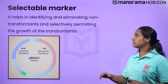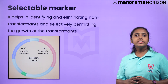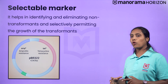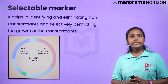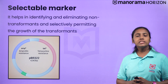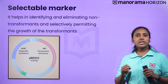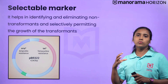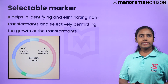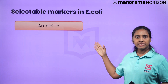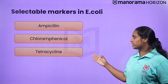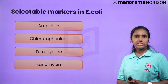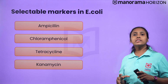The second feature is the selectable marker. It helps in identifying and eliminating non-transformants and selectively permitting the growth of transformants. Transformation is a procedure through which a piece of DNA is introduced into a host bacterium. The genes encoding resistance to antibiotics such as Ampicillin, Chloramphenicol, Tetracycline, Kanamycin, etc. are considered useful selectable markers for E. coli, as normal E. coli cells do not carry resistance against any of these antibiotics.